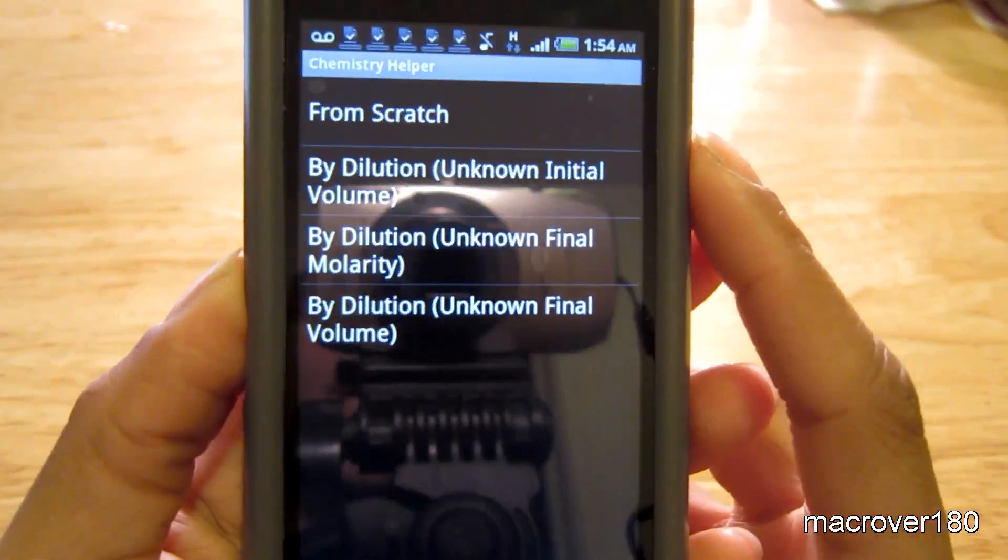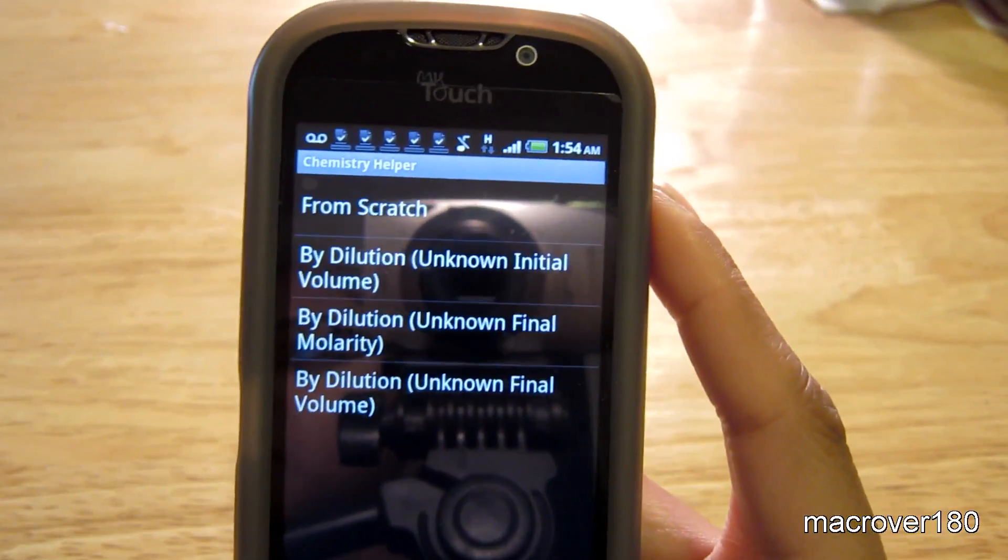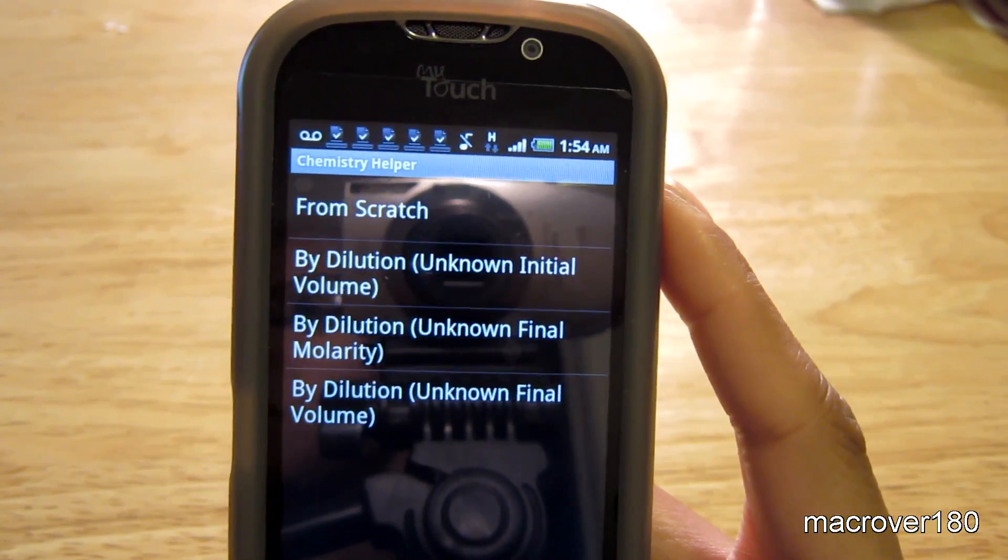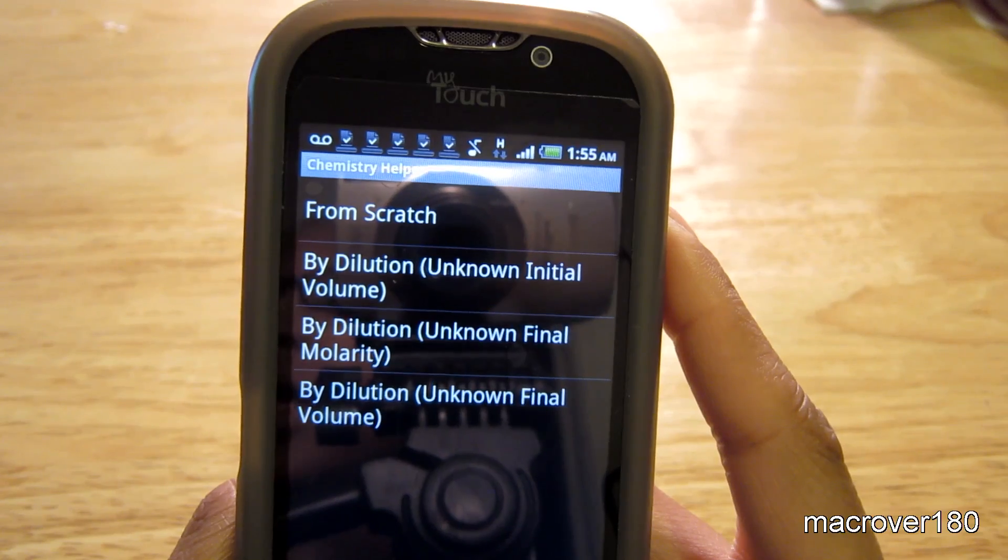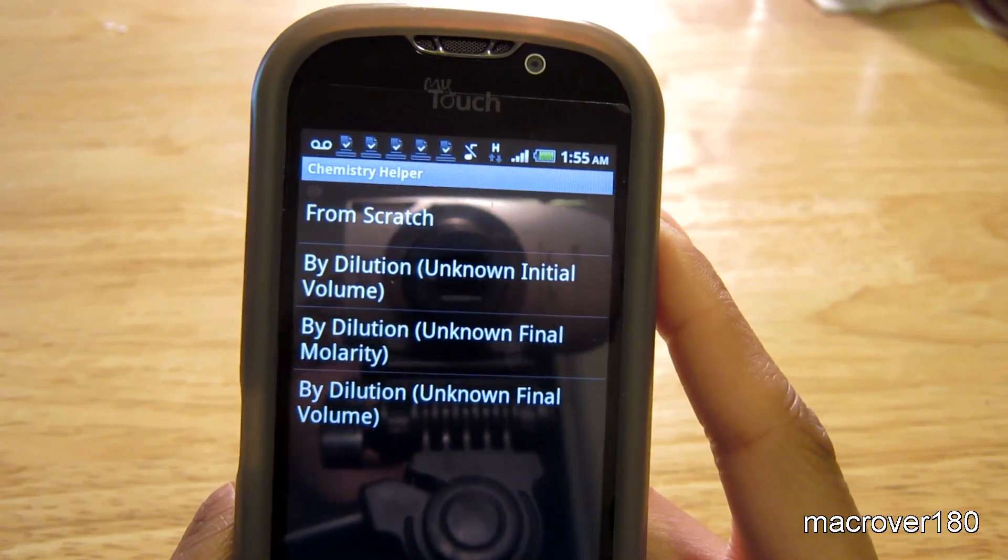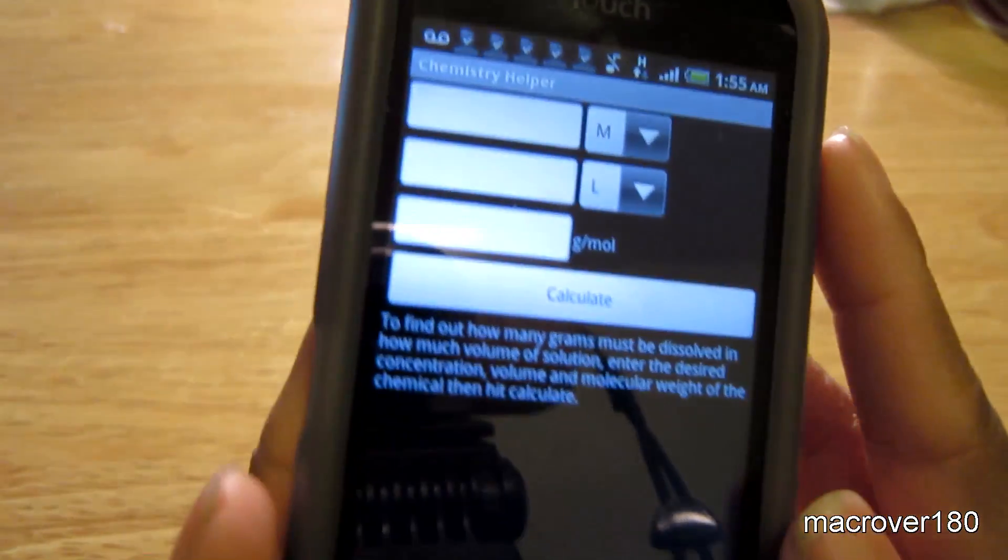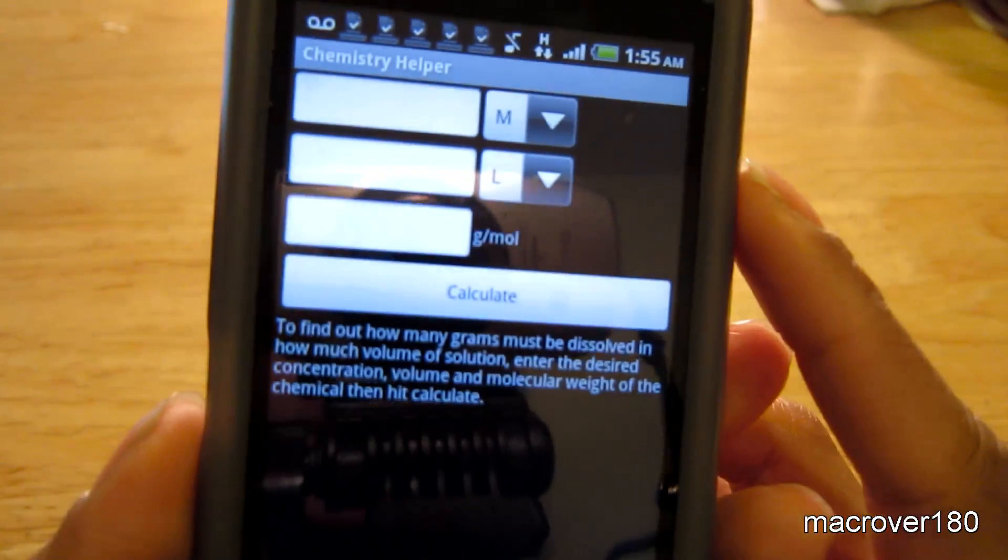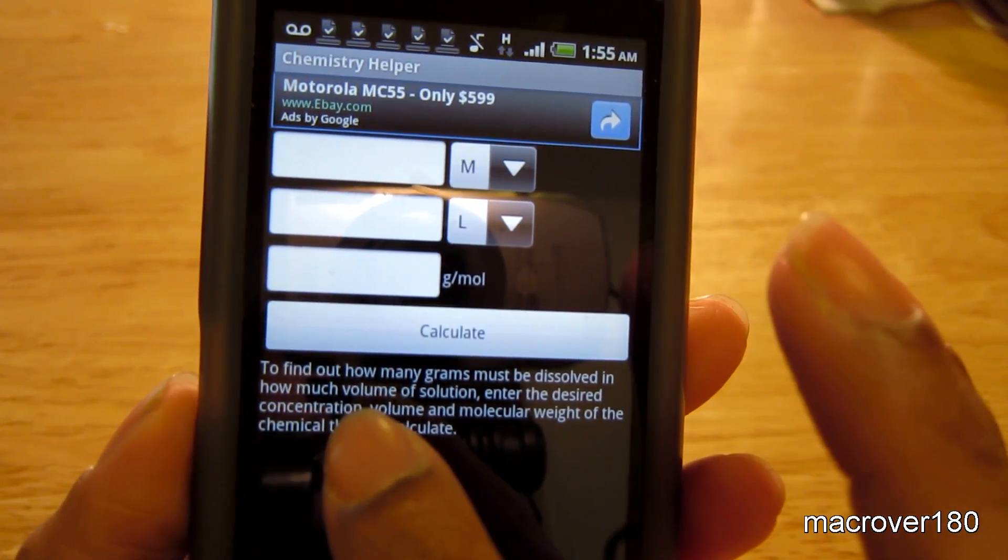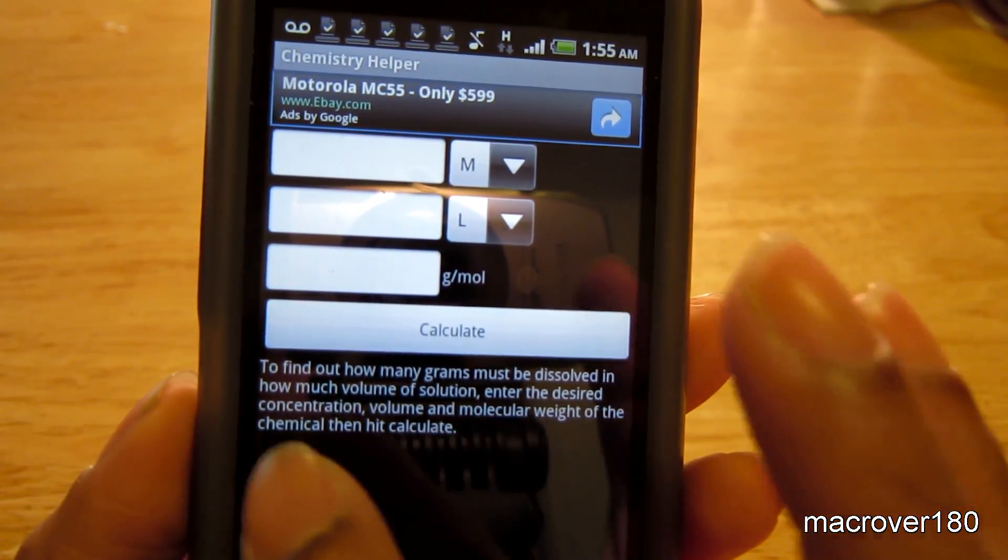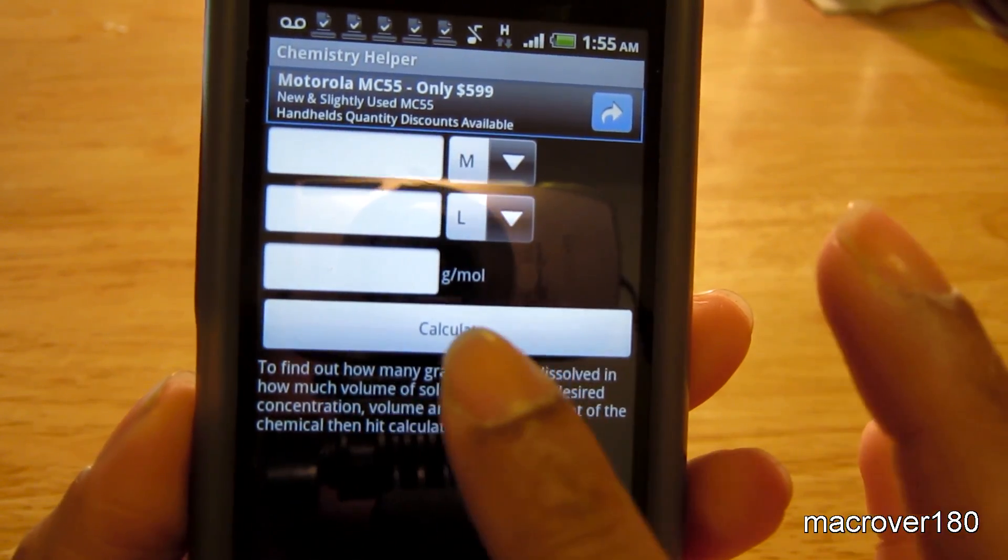Solution tools. Now this allows you to essentially calculate the molarity and the volume of solutions. And you can do so from scratch. And it tells you underneath, to find out how many grams must be dissolved in how much volume of solution, enter the desired concentration, volume, and molecular weight of the chemical, then hit calculate.